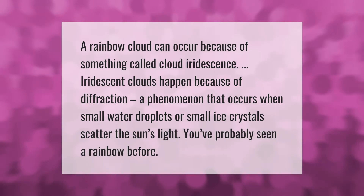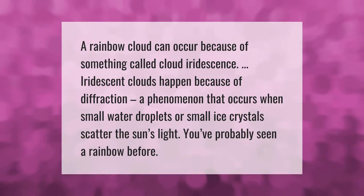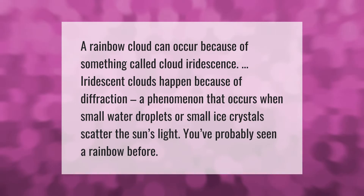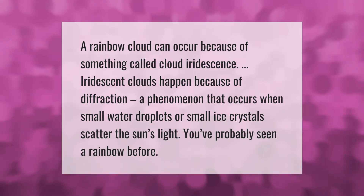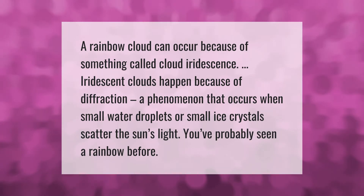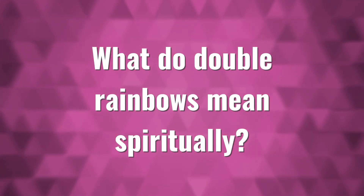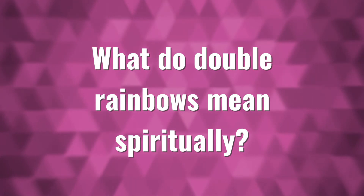A rainbow cloud can occur because of something called cloud iridescence. Iridescent clouds happen because of diffraction, a phenomenon that occurs when small water droplets or small ice crystals scatter the sun's light. You've probably seen a rainbow before.